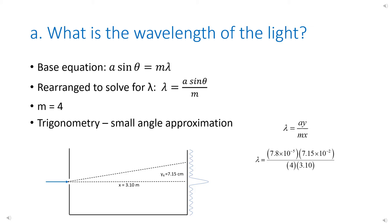Now we can use this equation to complete the wavelength solution: wavelength equals a times y divided by m times x. Once we complete the calculation, we find that the wavelength is equal to 4.49758 times 10 to the negative 7 meters. Using three significant figures, that is 4.50 times 10 to the negative 7 meters. Wavelength measurements are usually given in nanometers, which is 10 to the negative 9 meters, and doing that conversion to three sig figs gives us 450 nanometers.